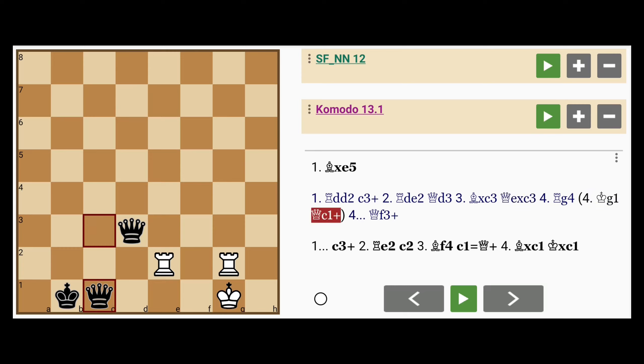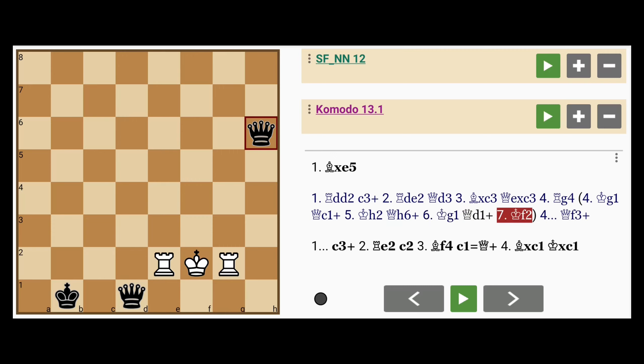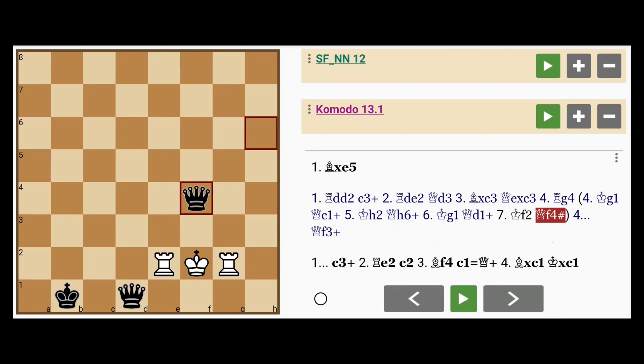Queen to c1 check, king to h2, queen to h6 check, king to g1, queen to d1 check. And if the rook intervenes, queen captures rook for mate. And if king to f2, queen to f4 mates.